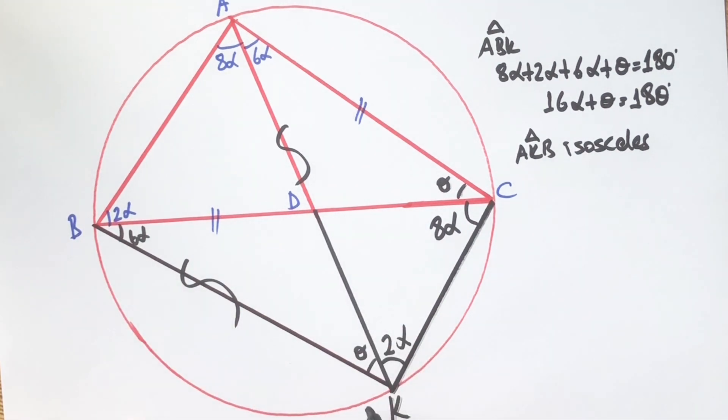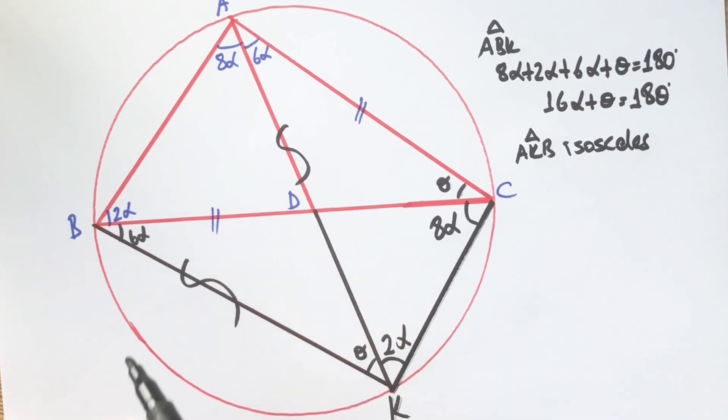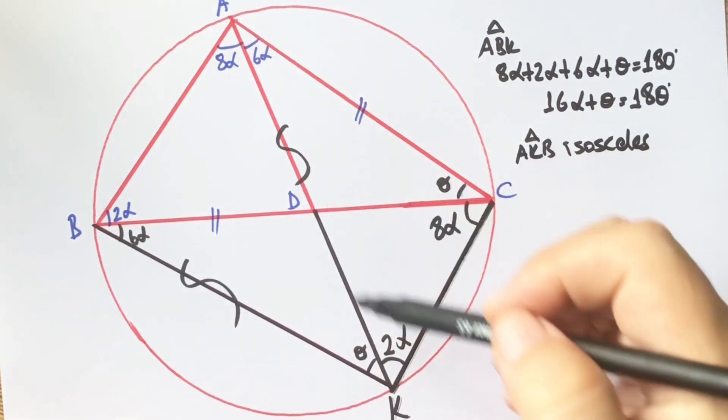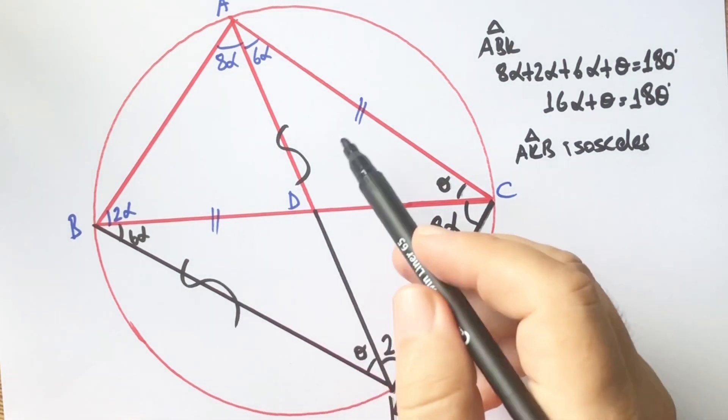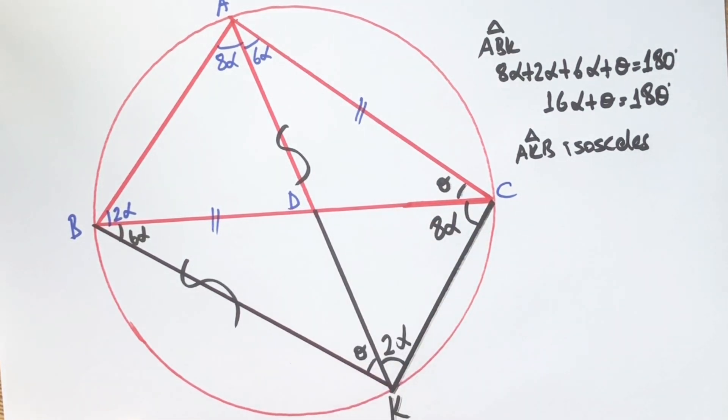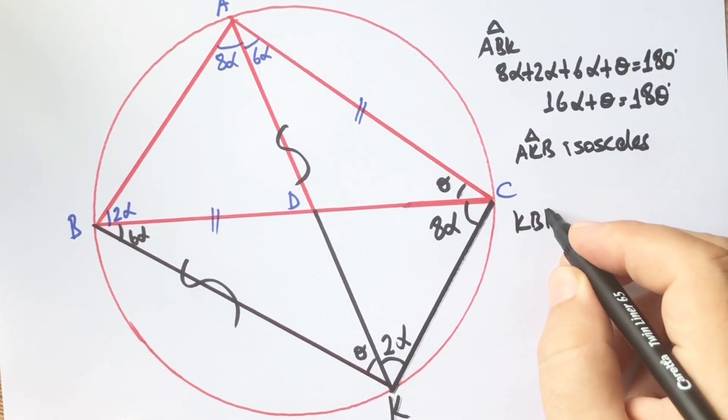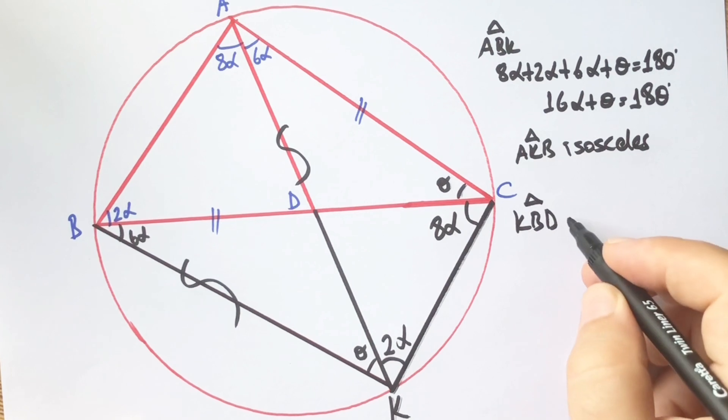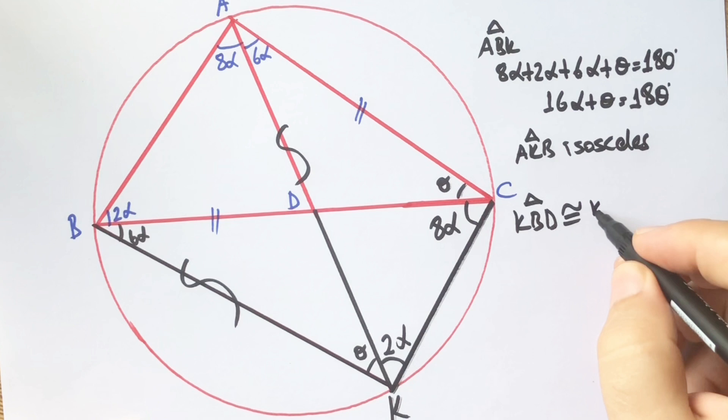If you notice that, triangle KBD and this triangle are congruent. Because they have the same 2α length, and the angles between these 2α lengths are also the same. That means triangle KBD and triangle KAC are congruent.